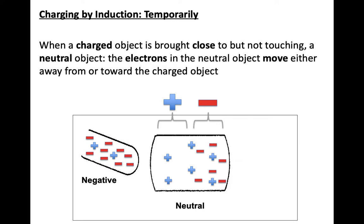So first we're looking at temporary induction. When we have a charged object brought close to but not touching a neutral object, the electrons in the neutral object will move either away from or towards the charged object.